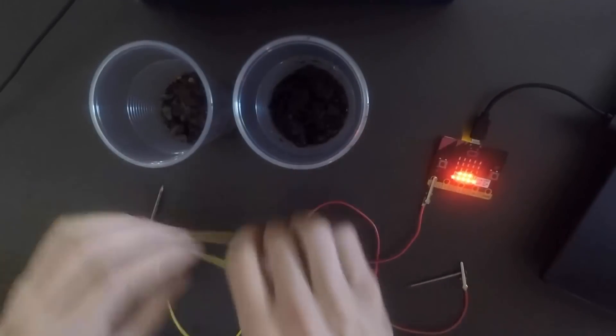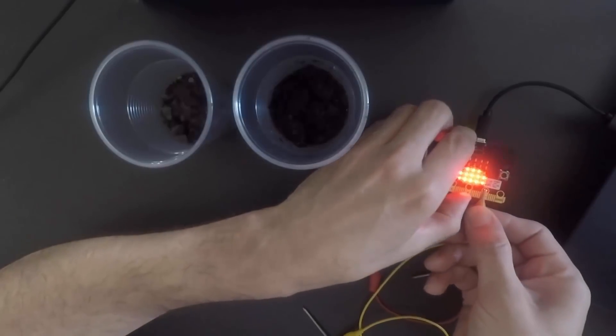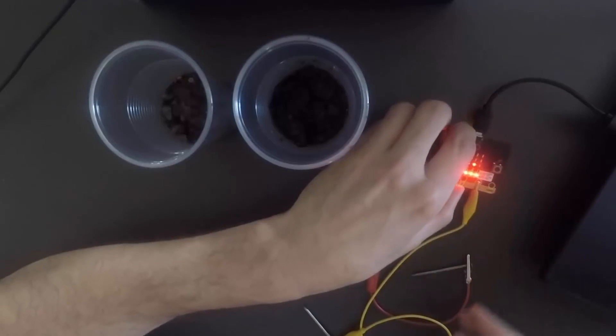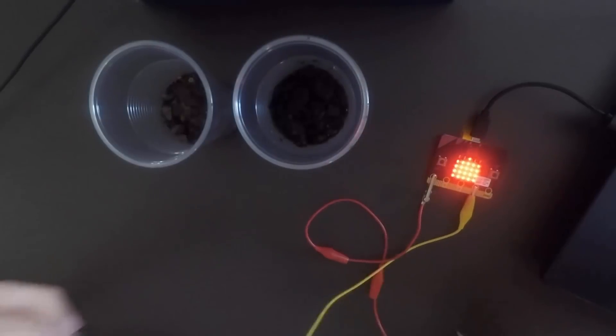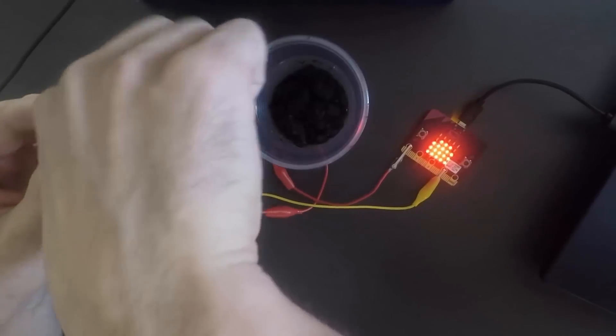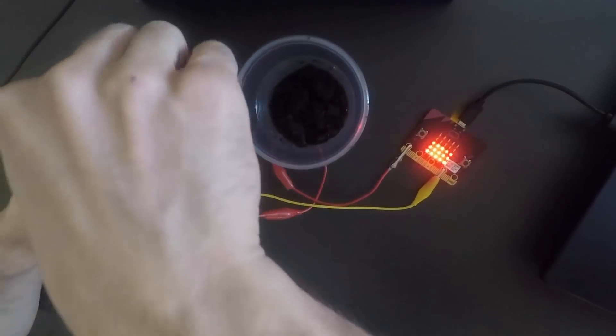Remember in our code we use the analog pin P0. That means we have to make sure that we are setting one of the crocodile clips to P0. The other part of the crocodile clip is set to the three volt section.